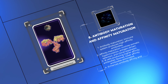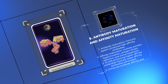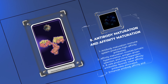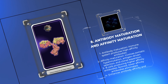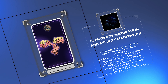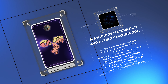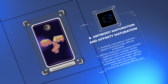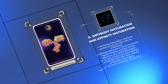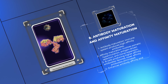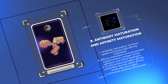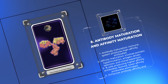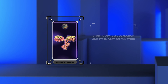During antibody maturation, the immune system fine-tunes its response by producing high affinity antibodies. Affinity maturation selects B cells that make antibodies with improved affinity for the antigen, resulting in an efficient immune response. This selection process involves somatic hypermutation, antigen-driven selection, and clonal expansion. B cells with higher affinity are favored while those with lower affinity are eliminated, ultimately enhancing antibody affinity and generating a robust immune defense.